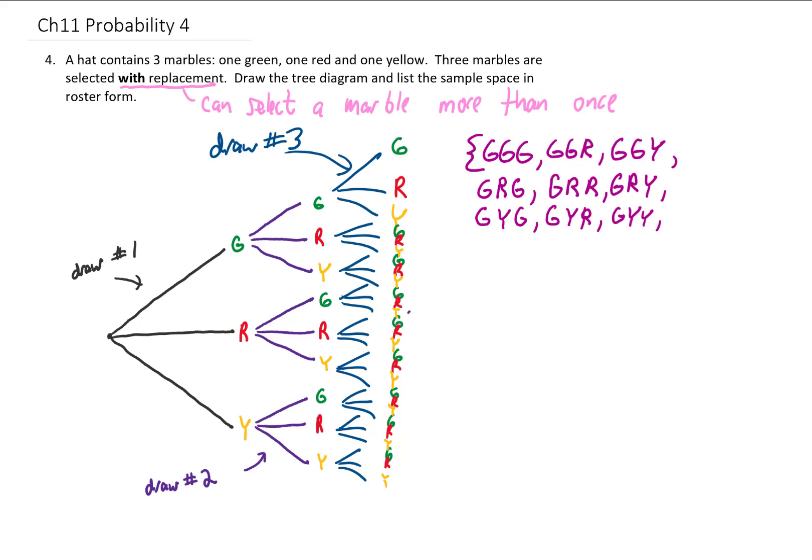Okay, I've got my first nine elements of my sample space. Those are these first nine elements right here. They all correspond to a first draw of green.